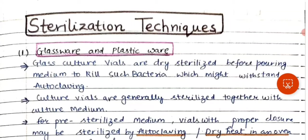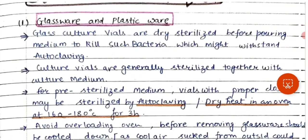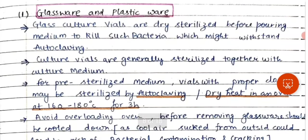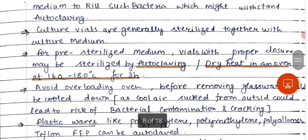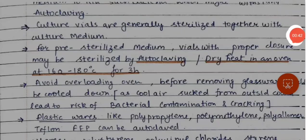In this video we are going to discuss sterilization techniques in plant biotechnology. Glass culture vials are dry sterilized before pouring medium to kill bacteria which might withstand autoclaving. Culture vials are generally sterilized together with the culture media. For pre-sterilized medium, vials with proper closure may be sterilized by autoclaving or dry heat.